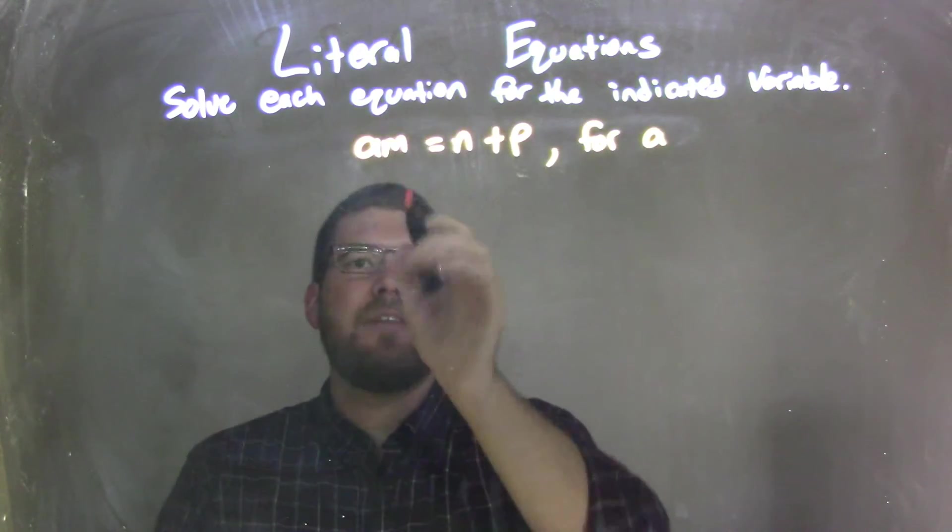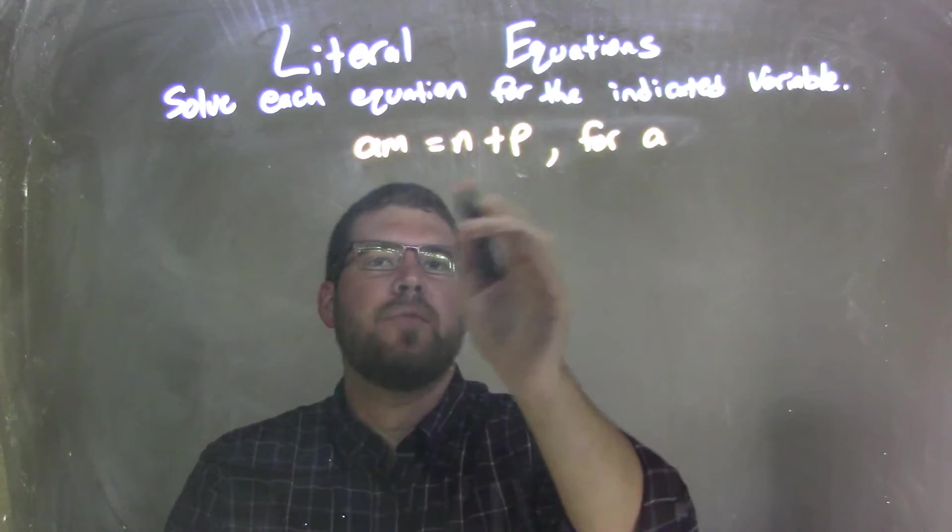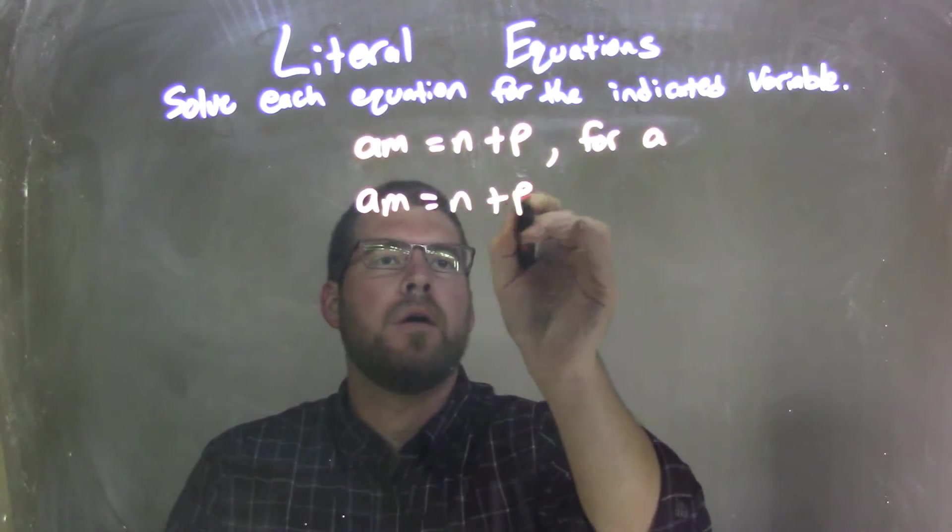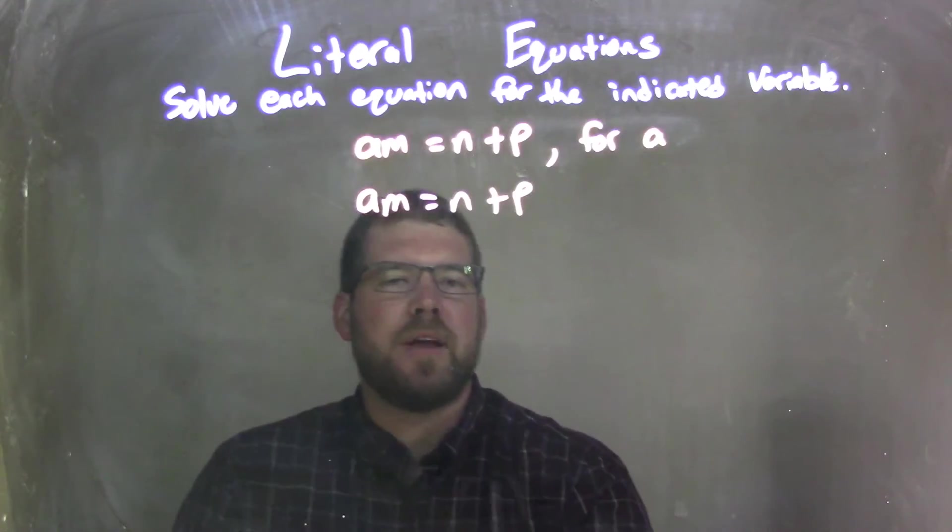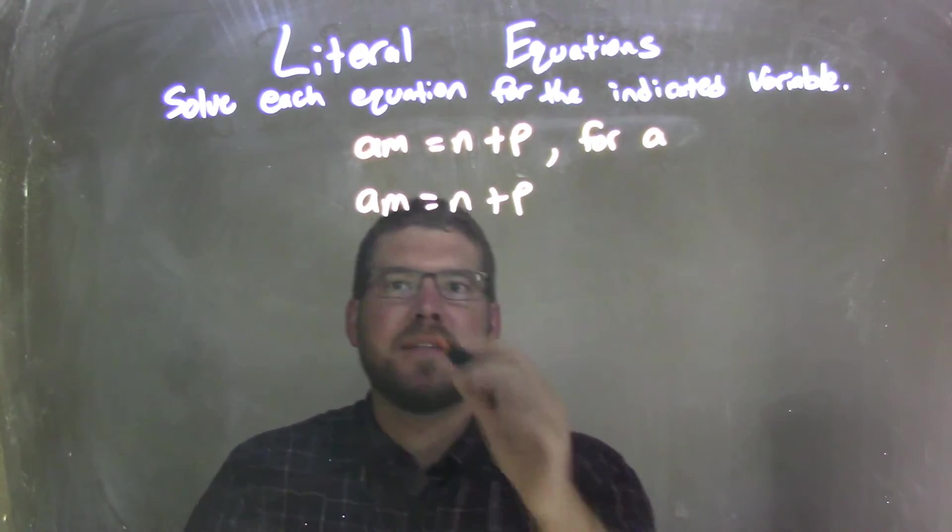So to do that, I have an a times m equals n plus p, and I'm going to rewrite that. Then I see there's multiplication there next to a. I need to get rid of that m to get a by itself.